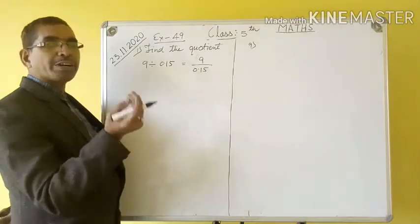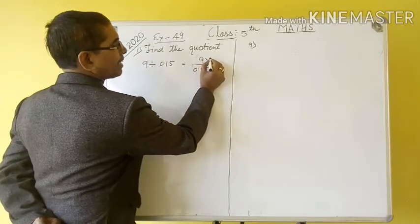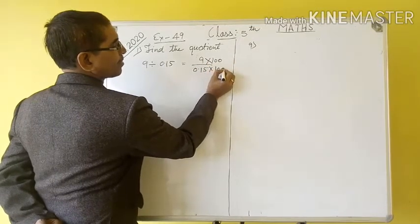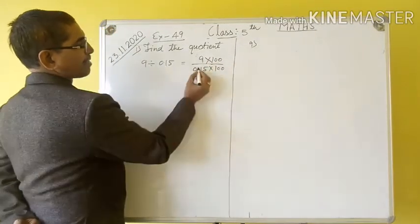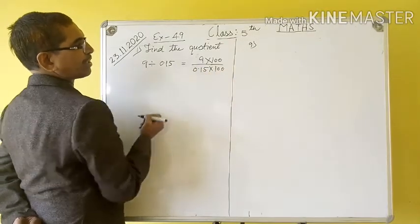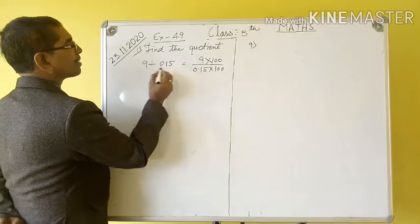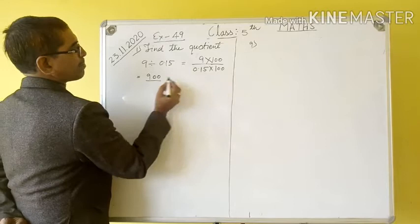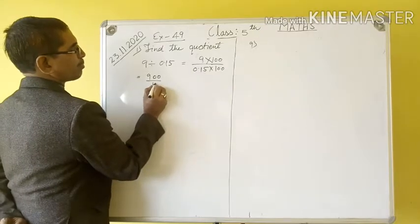First, to remove the decimal, we multiply both by 100, because the decimal place is 1, 2, so we use 100. This equals 9 into 100 is 900, and 0.15 into 100 is equal to 15.